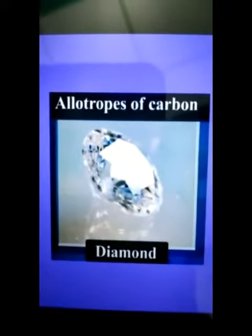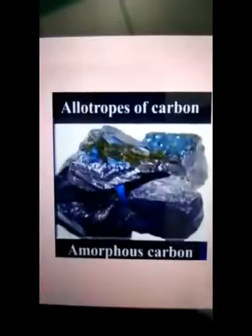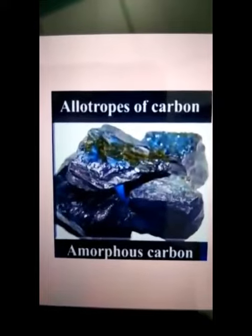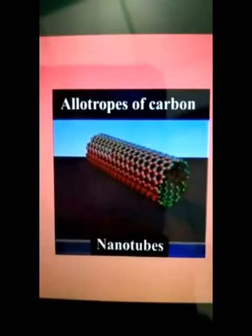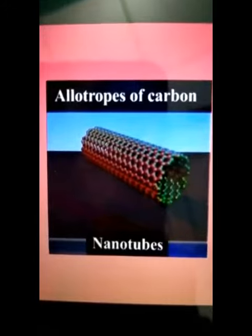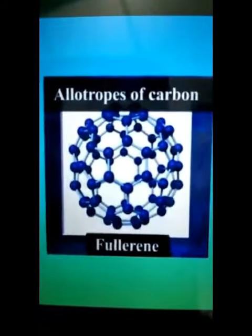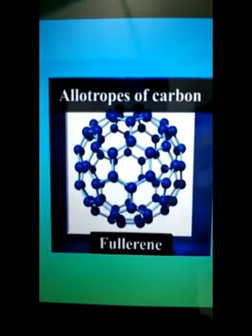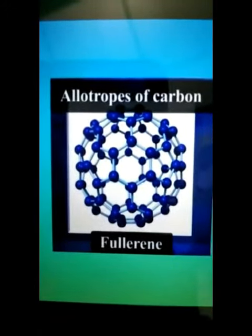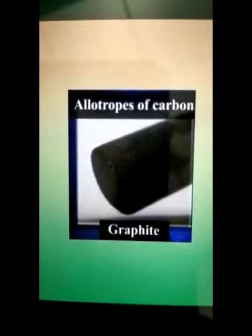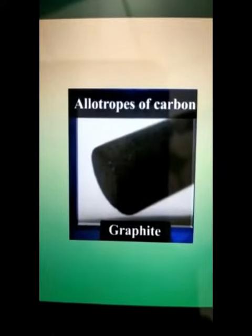The element Carbon occurs in different forms in nature with widely varying physical properties. These forms of Carbon are called Allotropes of Carbon.